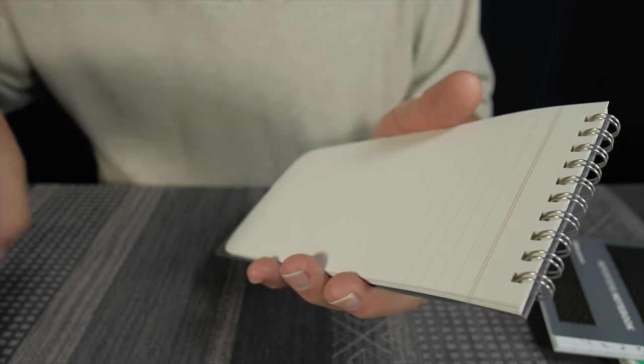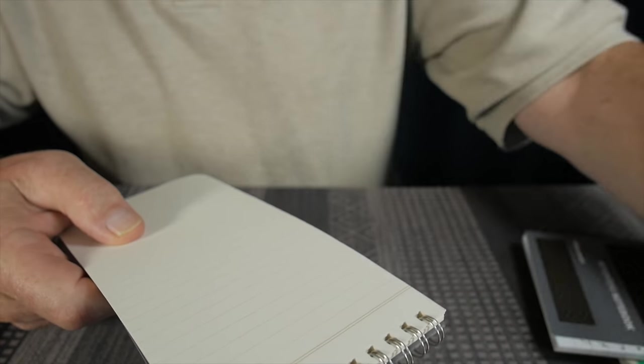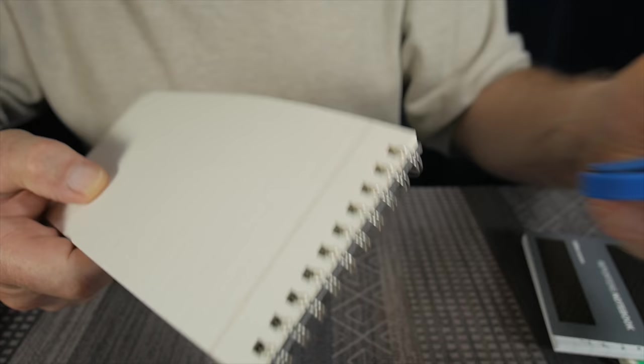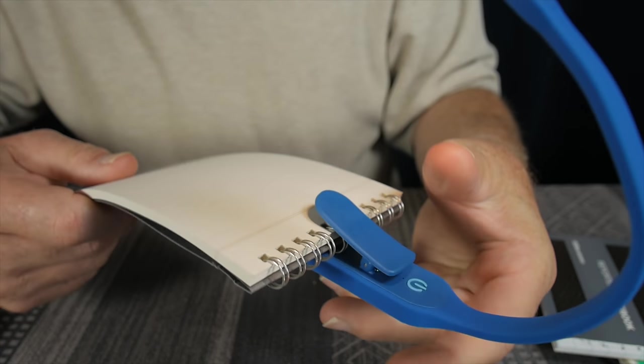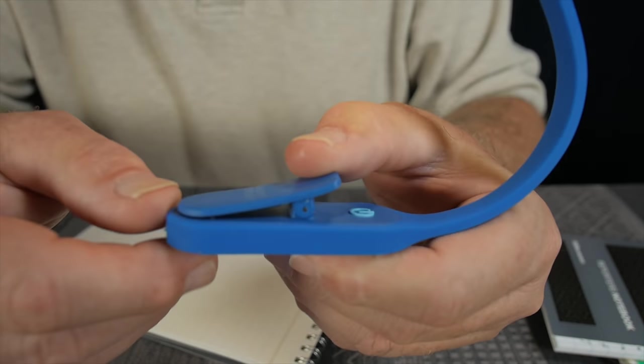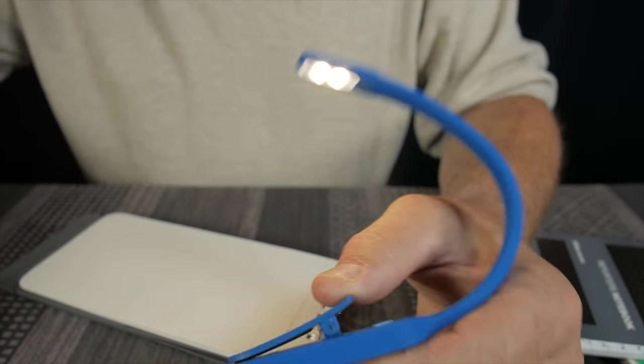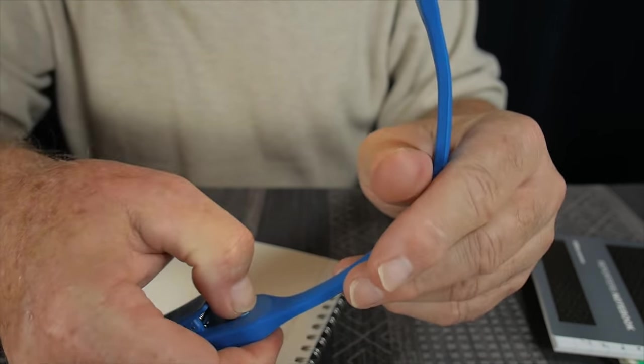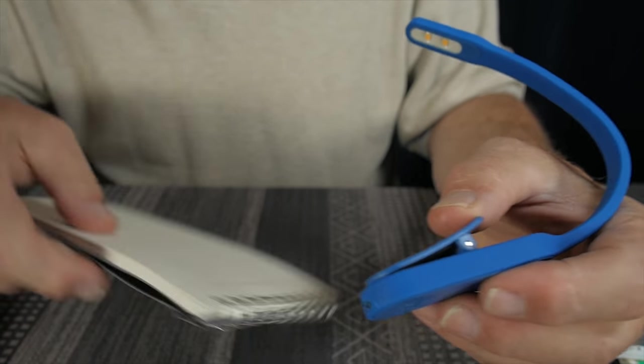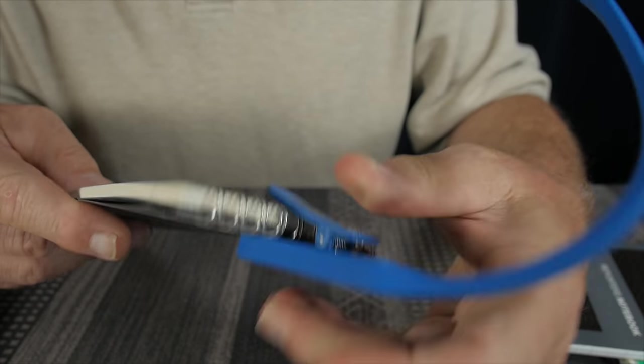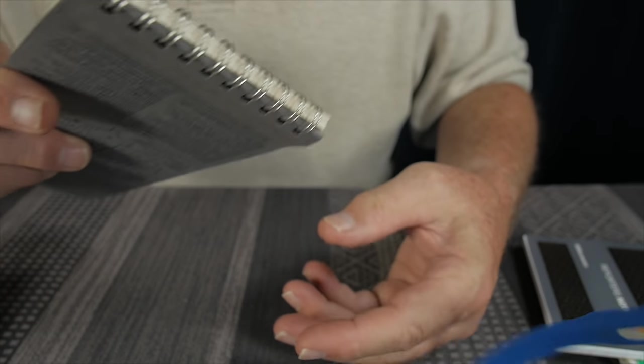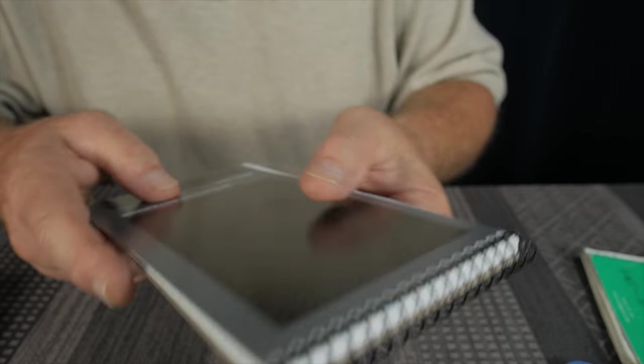The whole question, though, comes down to how do you secure a book light to the reporter's notebook? So the problem is that the clip here is only roughly four millimeters thick at most. And so this coil binding is a little too thick. It's not going to secure it. It's going to slip off.